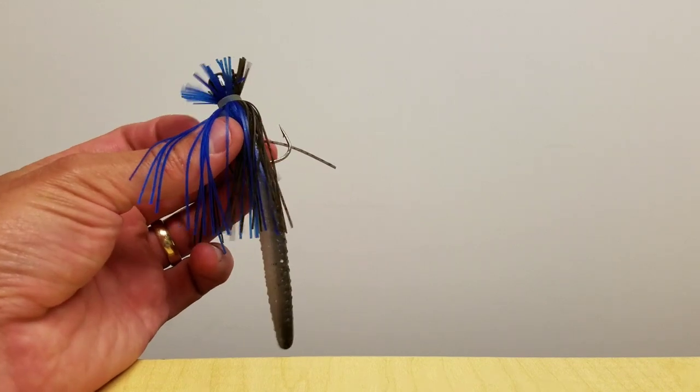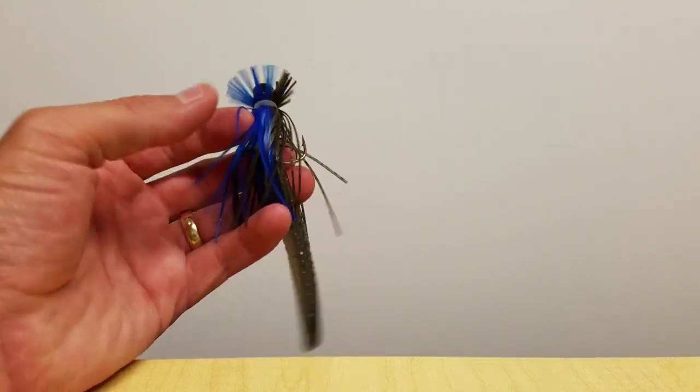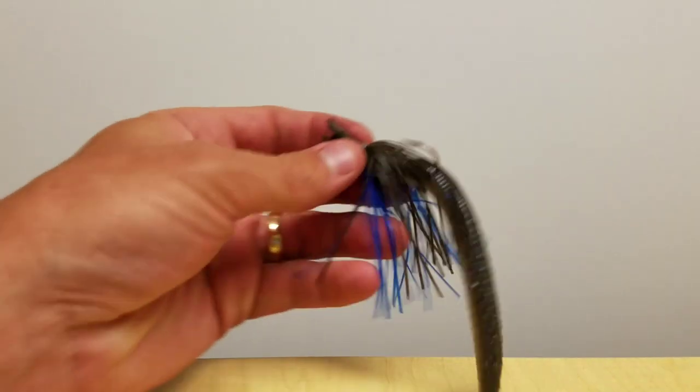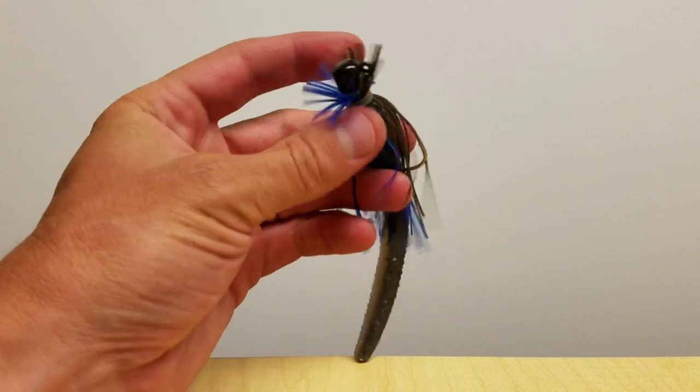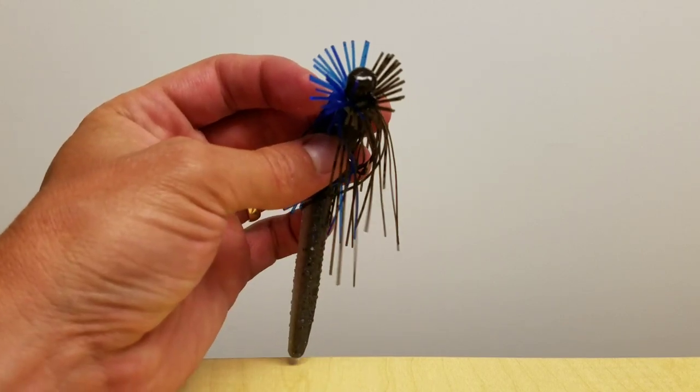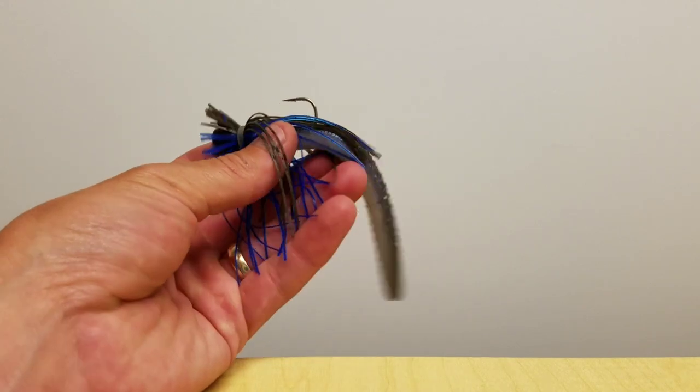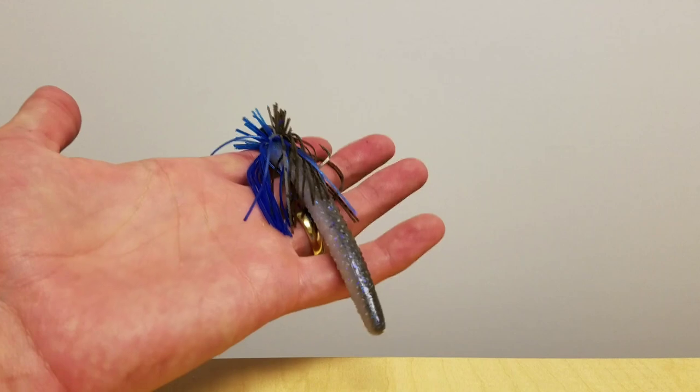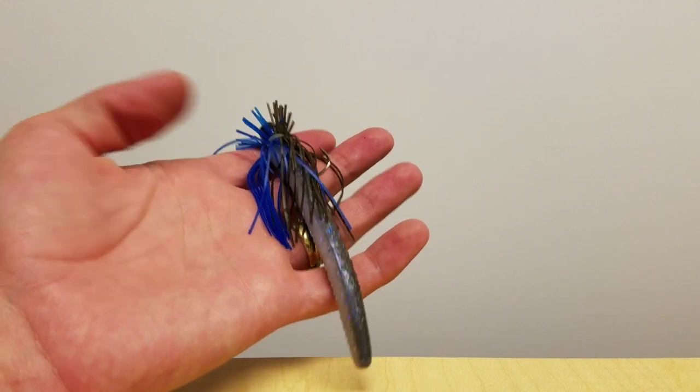This right here is a cheap DIY setup. As I said, the jig head itself is going to cost you about $1.50, $1.70. The skirt, maybe about $0.80 to $1.00. And then the bait, about $0.75. This is a pretty cheap jig, especially in the grand scheme of things.